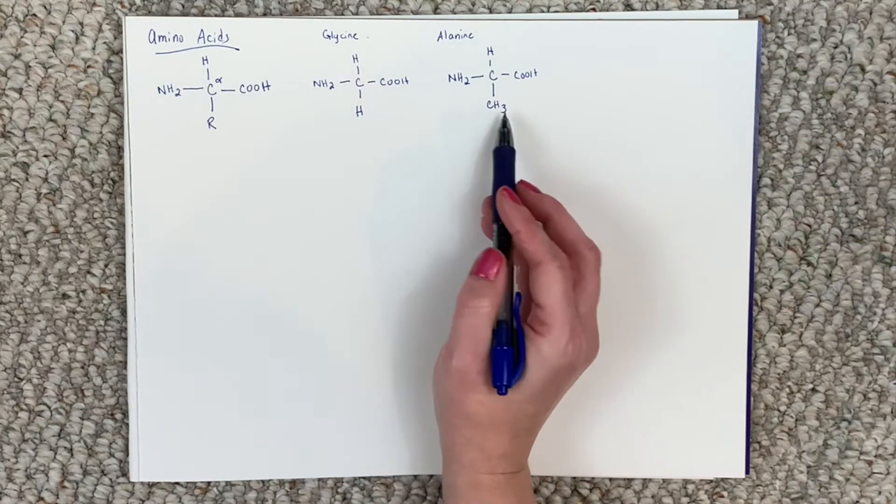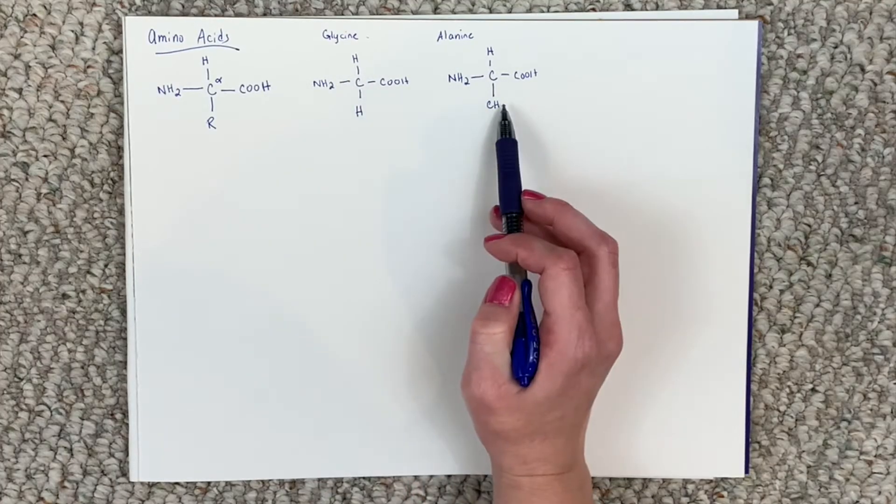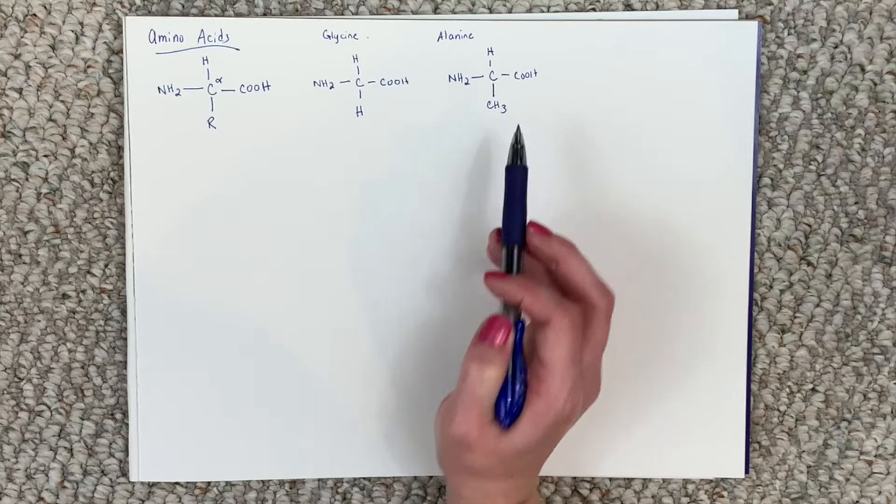So do you see the only thing differing between glycine and alanine is this R group, right? This side chain.